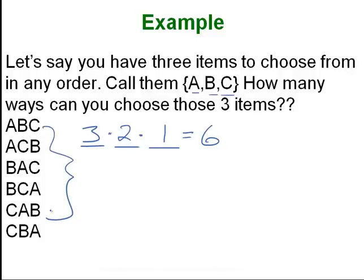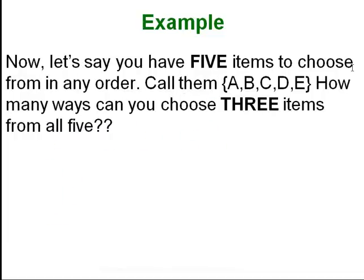The dash technique helps you organize your thoughts and figure out how to count these things. It also ends up being 3 factorial. Here's another example. Let's say you have five items to choose from — five trophies — but you still only have room for three. So you need to choose three of those trophies. How many dashes are we going to have — five or three?